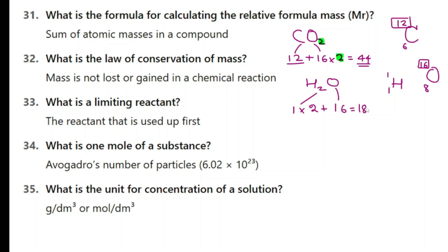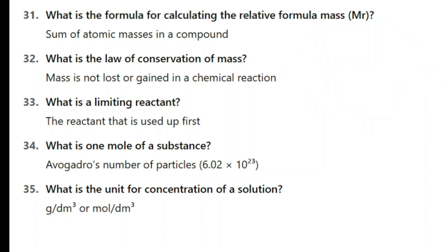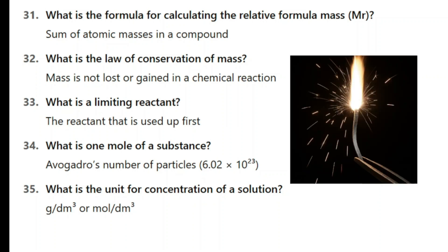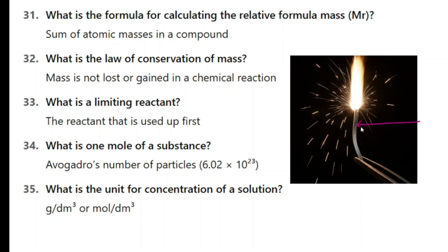What is the law of conservation of mass? In a chemical reaction, mass is not lost or gained — the total mass of the reactants is equal to the total mass of the products. What is a limiting reactant? The reactant that is used up first. For example, burning a magnesium strip: magnesium reacts with oxygen from the atmosphere to produce magnesium oxide. When the magnesium strip burns up the reaction stops. Oxygen comes from the atmosphere and is plentiful, so magnesium is the limiting reactant here.